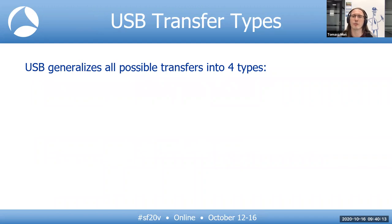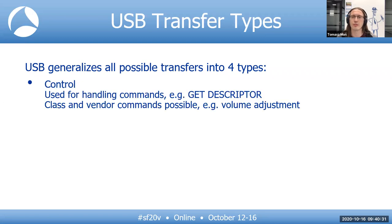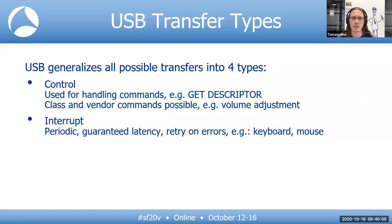USB stands for Universal Serial Bus. To be universal, it must support many devices with different needs. All possible transfer types are generalized into four types. USB supports plug-and-play and is able to detect what type of device is connected — this is possible thanks to control transfer. Every USB device knows how to respond to the getDescriptor command, which contains basic information the host uses to know how to talk to it. Control transfers can also be used for vendor commands, for example for volume adjustment. Control transfer is the only mandatory transfer type. Interrupt is another transfer type, but the name is essentially misleading because it has nothing to do with hardware interrupts — it is intended to handle things that used to be handled via interrupts in the past.